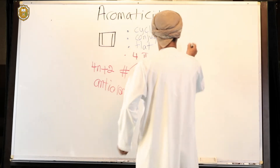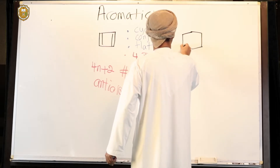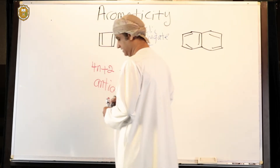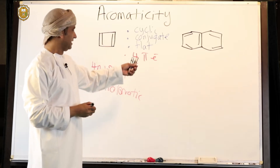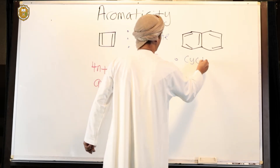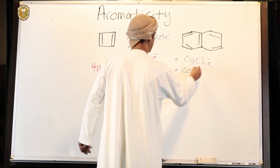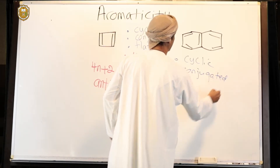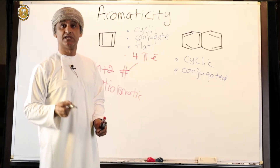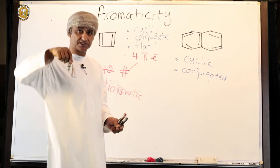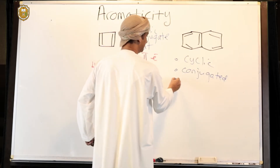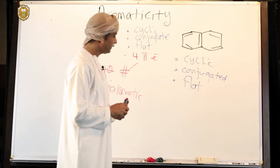Let's take naphthalene. This is the structure of naphthalene. Let's check the requirements: Is it cyclic? Of course it is cyclic. Is it conjugated? It is conjugated — all the carbon atoms in naphthalene are sp2 hybridized, and there is a P orbital on each of them, so there is cyclic conjugation. Is it flat? Of course it is flat and planar.